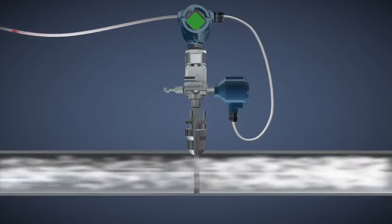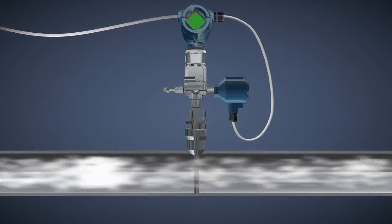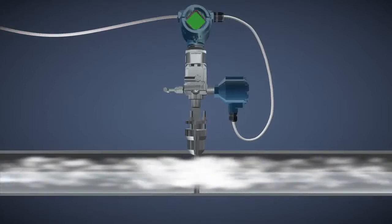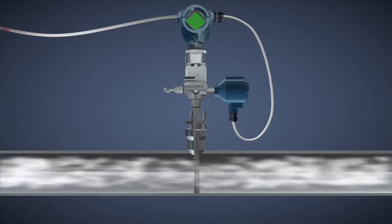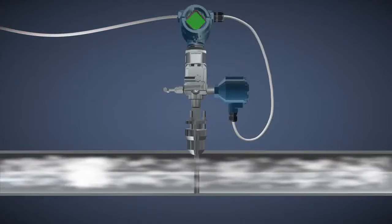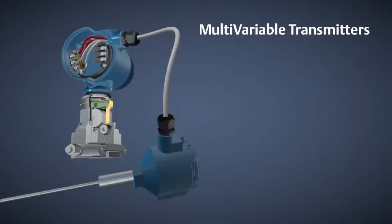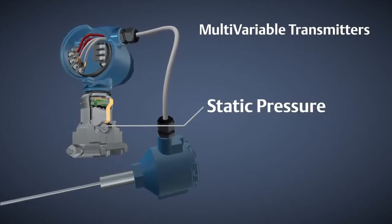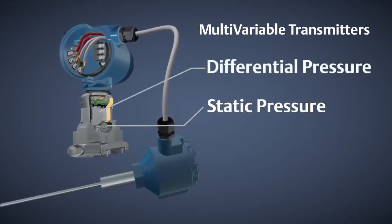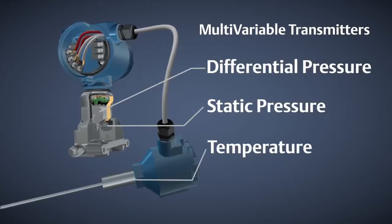Today's advanced multivariable transmitters perform a compensated mass flow calculation in the transmitter of the integrated flow meter. The multivariable transmitter measures static pressure, differential pressure, and process temperature in one device.